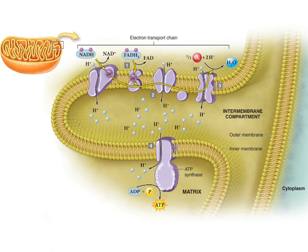Follow the arrow from the two electrons at the first enzyme through the other electron carriers. The electrons release energy as they travel through the proteins that make up the electron transport chain. The mitochondrion uses this energy to produce ATP.